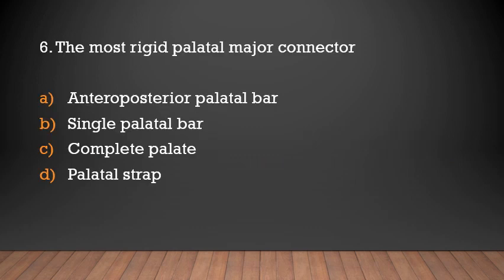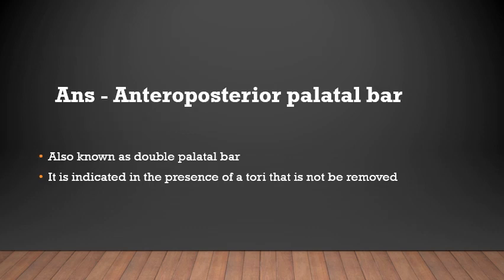Which is the most rigid palatal major connector? Options: anterior-to-posterior palatal bar, single palatal bar, complete palate, palatal strap. The answer is anterior-to-posterior palatal bar, also known as the double palatal bar. It is indicated in the presence of a torus that has not been removed.